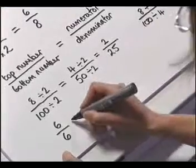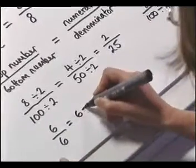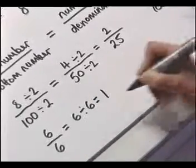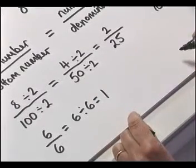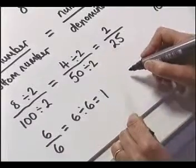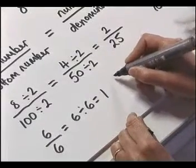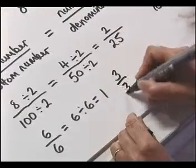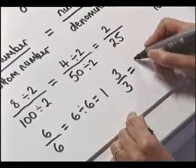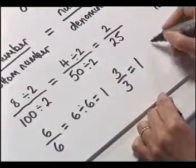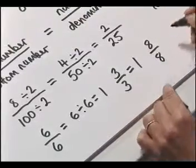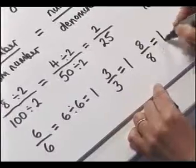Now if we take all the pieces of a fraction — like I did with my chocolate, I took all six of them — that's the same as six divided by six, and that was our whole. And any whole number can be written this way: three thirds, if we take all the pieces, gives us one; eight eighths, if we take all the pieces, gives us one.